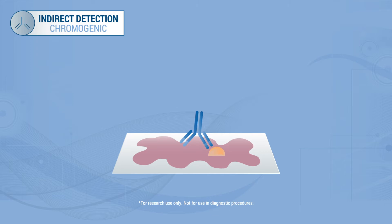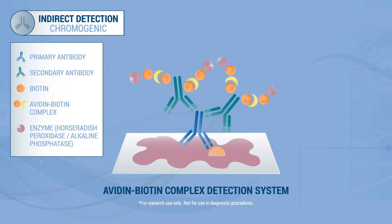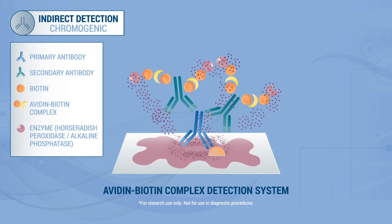The avidin-biotin complex, or ABC detection system, involves the addition of a biotin-conjugated secondary antibody to the primary antibody, followed by an enzyme-conjugated avidin-biotin complex that catalyzes chromogen precipitation at the site of the bound primary antibody.